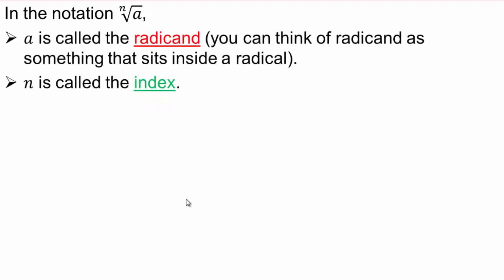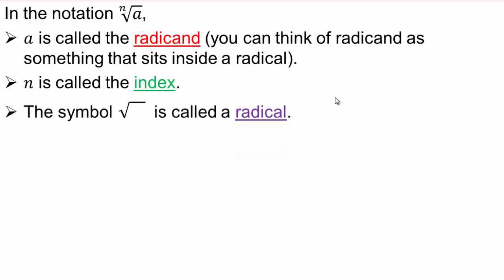In the notation nth root of a: a is called the radicand and n is called the index. So the a inside that symbol is the radicand, and n is the index. Just like we made sure you understood base and exponents, you want to be able to identify radicand and index. That symbol is called a radical.